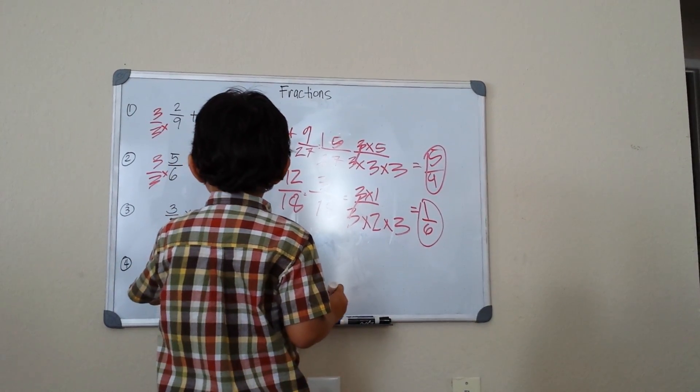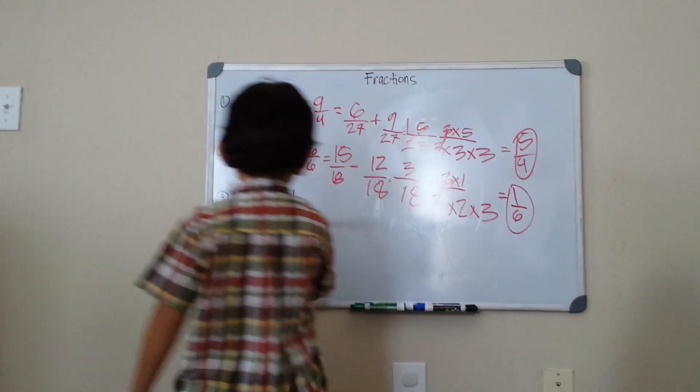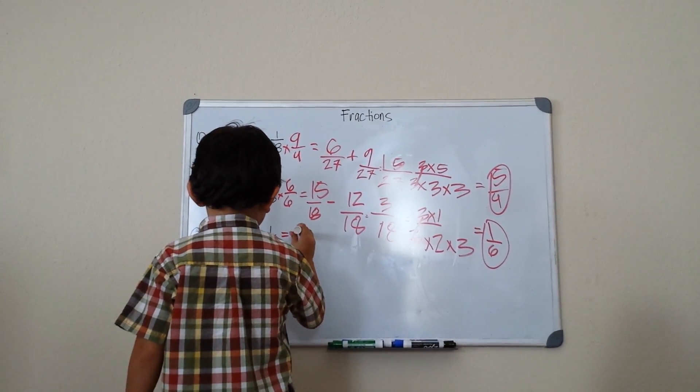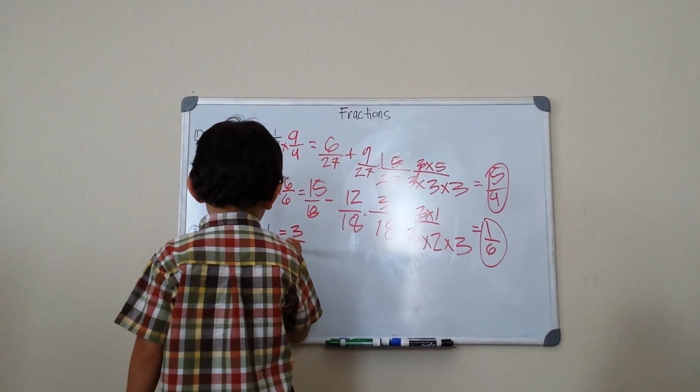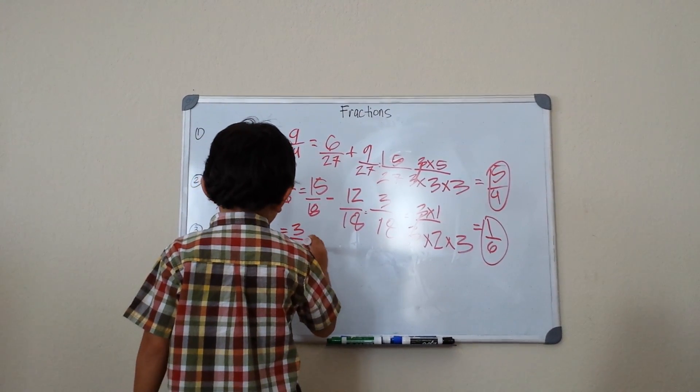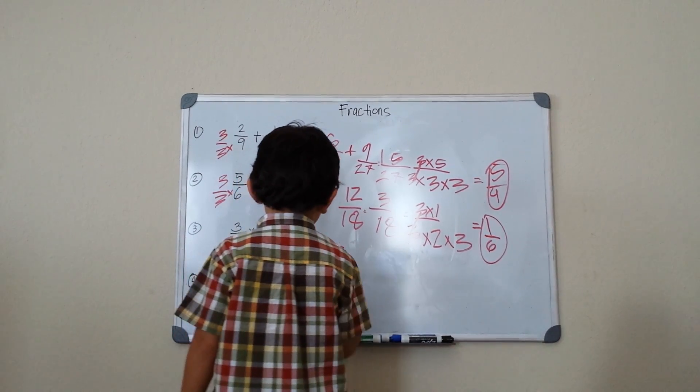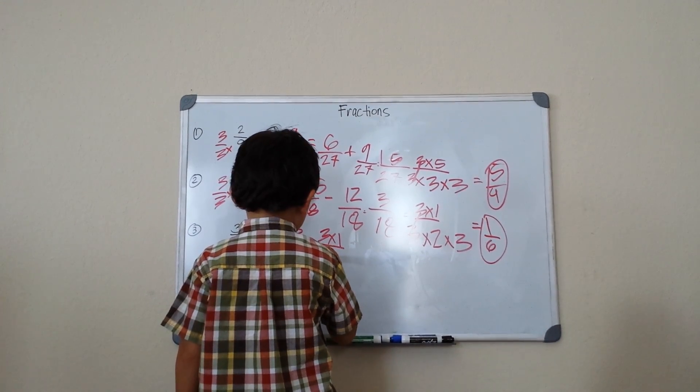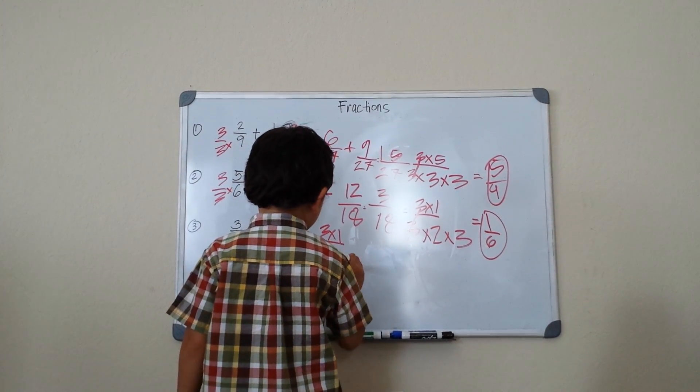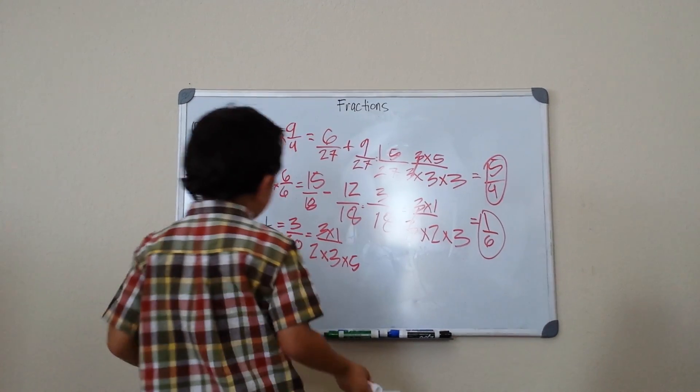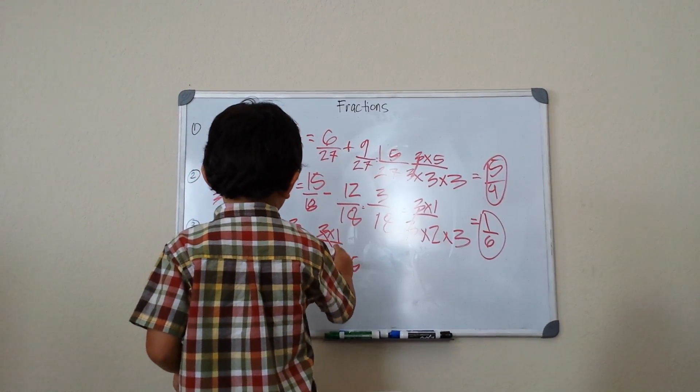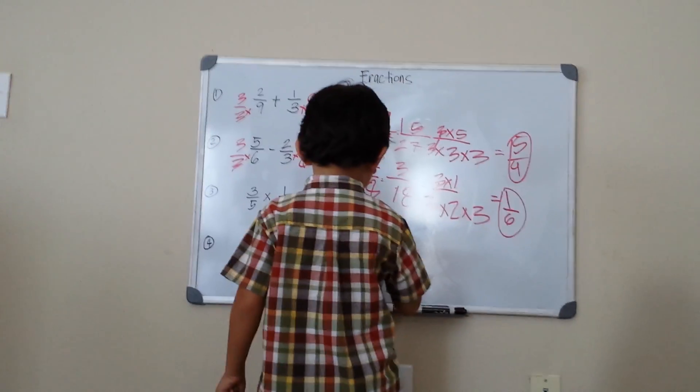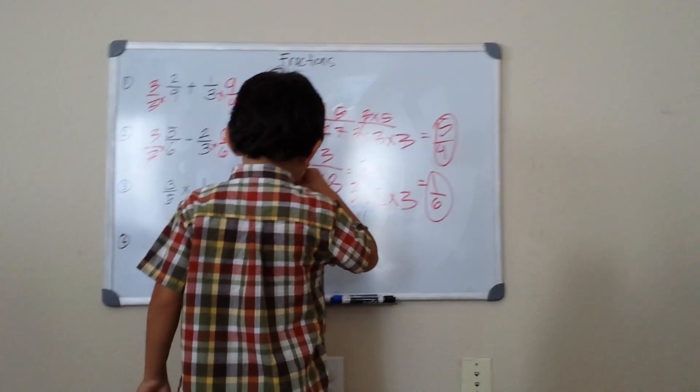Now 3/5 times 1/6. 3 times 1 equals 3, and 5 times 6 gives me 30. We can simplify it: 3 times 1 and 3 times 10. Now I see the same ones, so it will be 1/10.